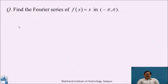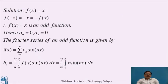Now pause the video for a while and find the Fourier series of f(x) = x in the interval minus pi to pi. I hope you have completed. Here f(x) = x, and clearly f(x) = x is an odd function. Hence a₀ = 0 and aₙ = 0. The Fourier series of an odd function is given by f(x) = summation from n=1 to infinity of bₙ sin(nx), where bₙ = (2/π) ∫₀^π f(x) sin(nx) dx = (2/π) ∫₀^π x sin(nx) dx.